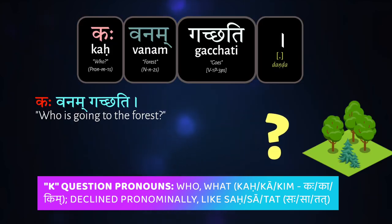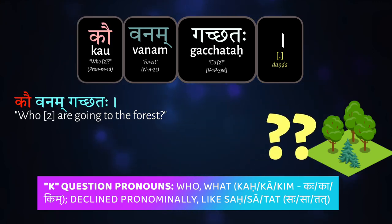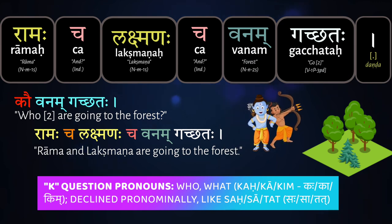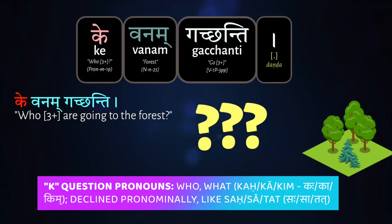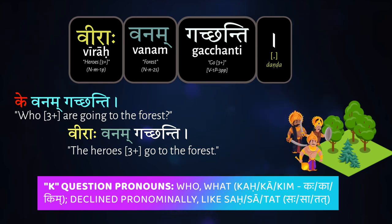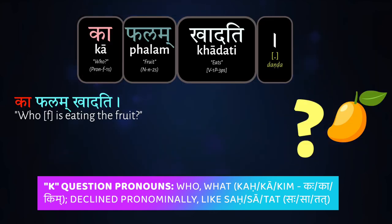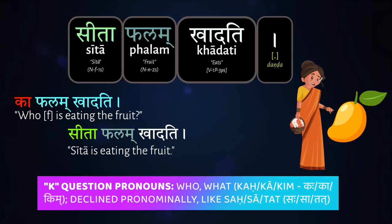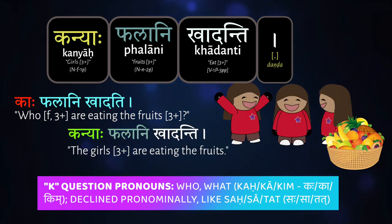'Kaḥ vanam gacchati' — who is going to the forest? 'Rāmaḥ vanam gacchati.' 'Kau vanam gacchataḥ' — Rāma and Lakṣmaṇa are going to the forest, both. 'Ke vanam gacchanti, vīrāḥ vanam gacchanti' — the heroes are going to the forest. For feminine, we'll have kā ke kāḥ. 'Kā phalam khādati' — who is eating the fruit? 'Sītā phalam khādati.' 'Kāḥ phalāni khādanti, kanyāḥ phalāni khādanti' — the girls, three or more, are eating the many fruits.